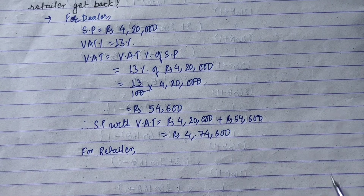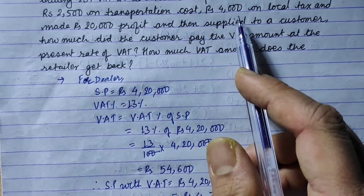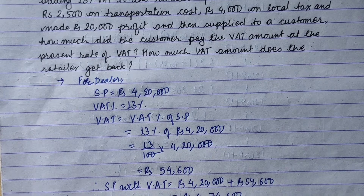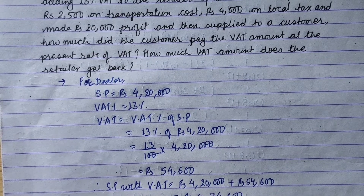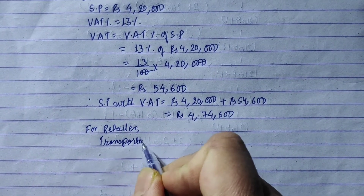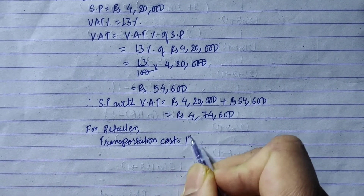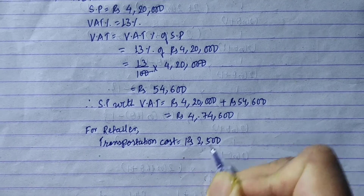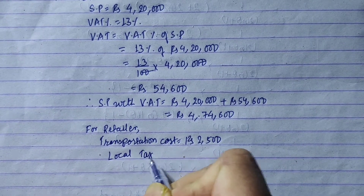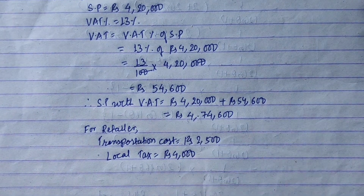Now for the retailer's price calculation: transportation cost is rupees 2,500, local tax is rupees 4,000, and profit is rupees 20,000. Adding these to the base price of rupees 4,46,500 gives the retailer's cost before VAT.